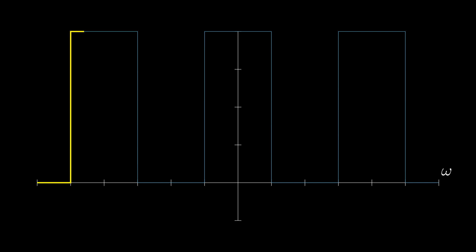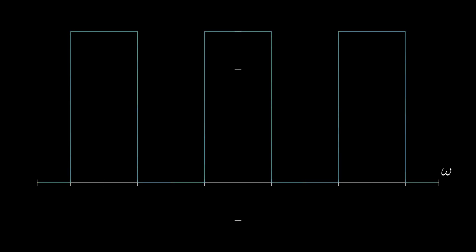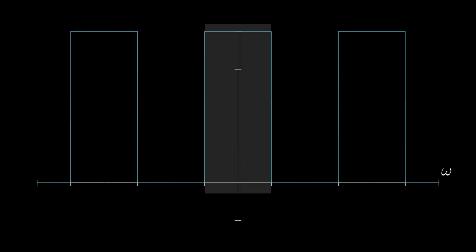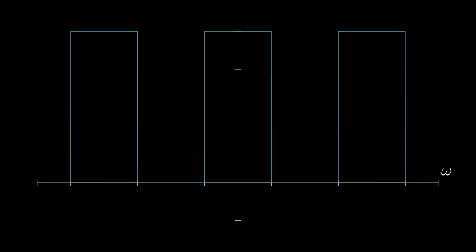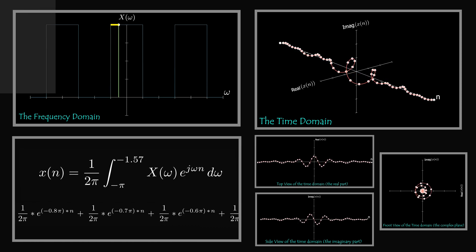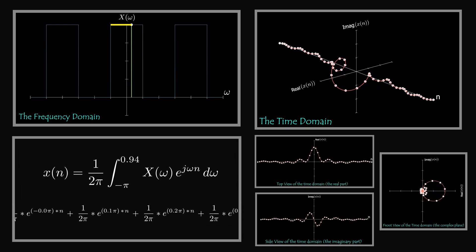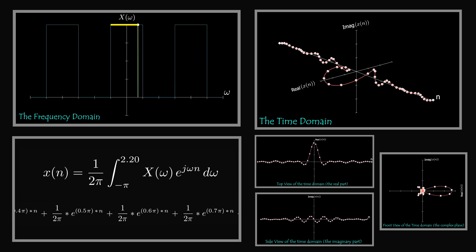The frequency domain signal is continuous and consists of an infinite number of points, and each point corresponds to a discrete complex exponential in the time domain. Since the frequency domain is the summation of infinite points, the time domain is the summation of infinite discrete time complex exponentials. But since the discrete time complex exponential has a frequency range of width 2π, after which signals repeat, we select a 2π interval in the frequency domain — which is one period of the frequency domain signal — and sum all the corresponding discrete time complex exponentials.